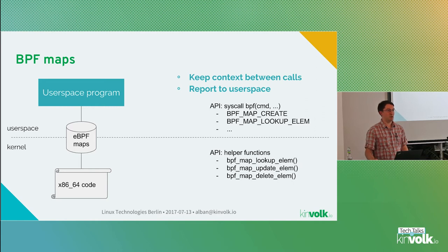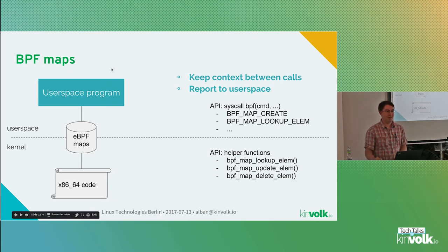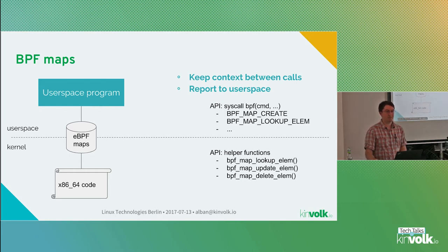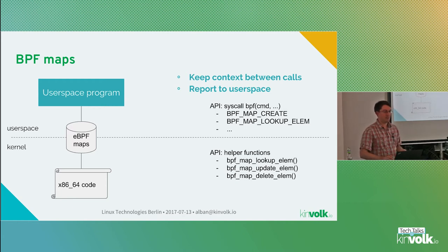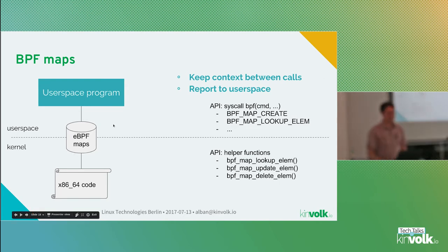eBPF maps are a new feature of extended BPF not present in classic BPF. A map is like a hash table or array — some kind of variable that can be shared between the eBPF program in the kernel and the user-space program. It can be used for the BPF program to send information back to user space, or to share state between different executions of the BPF program. For example, if a BPF program is executed for every packet, it can maintain context between different instances of execution using a variable stored in the map.